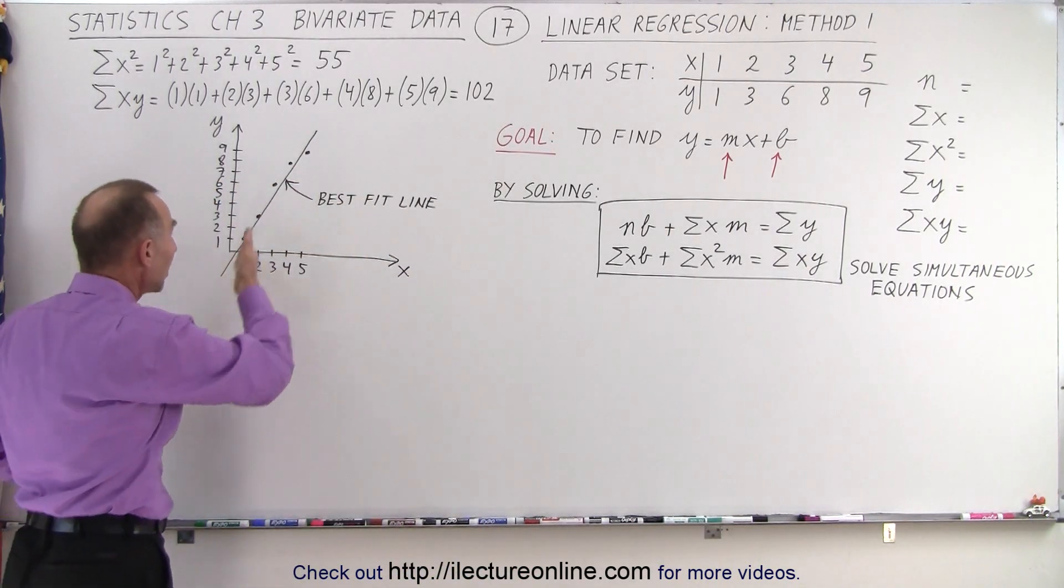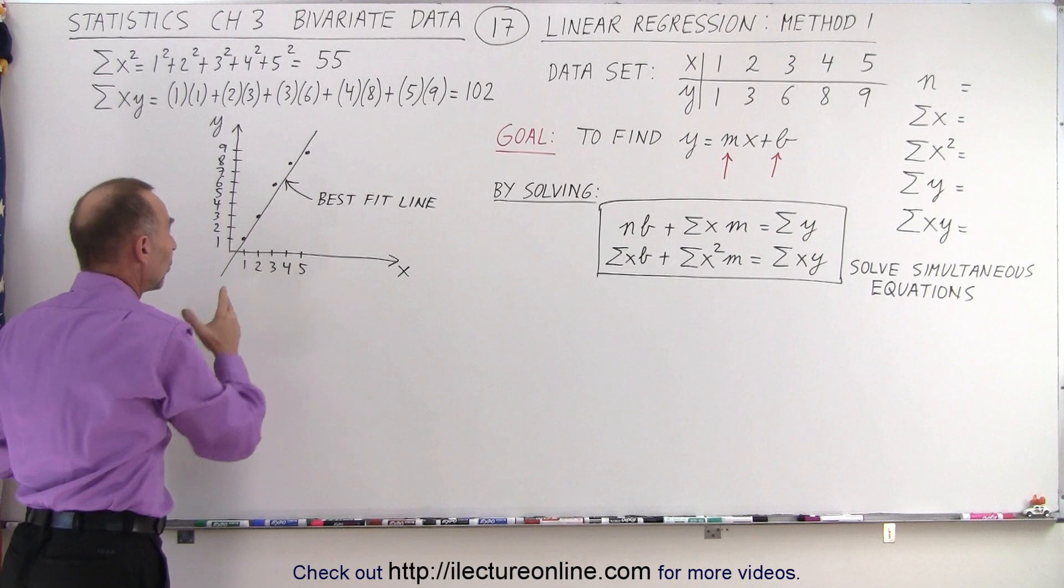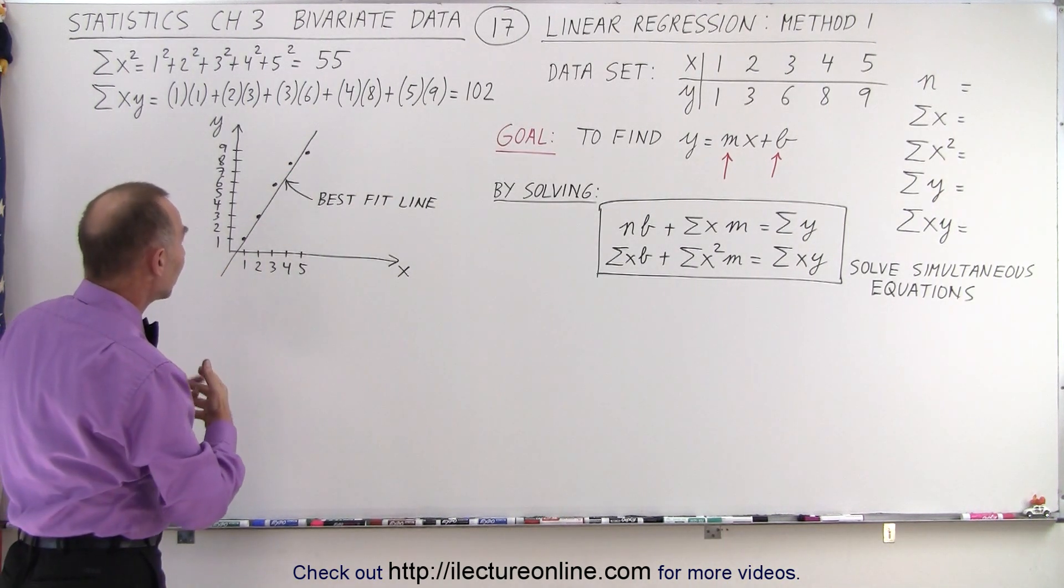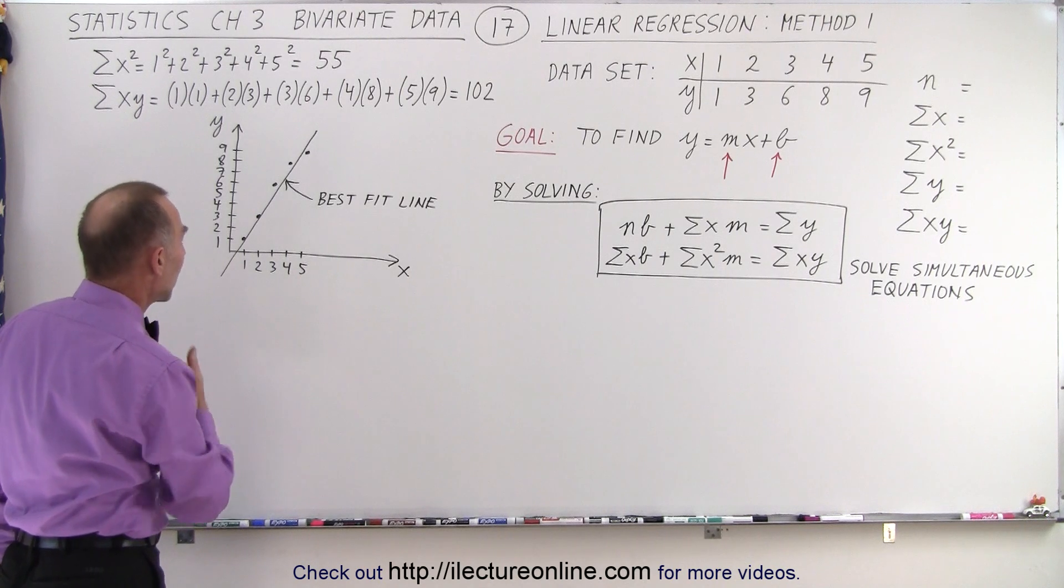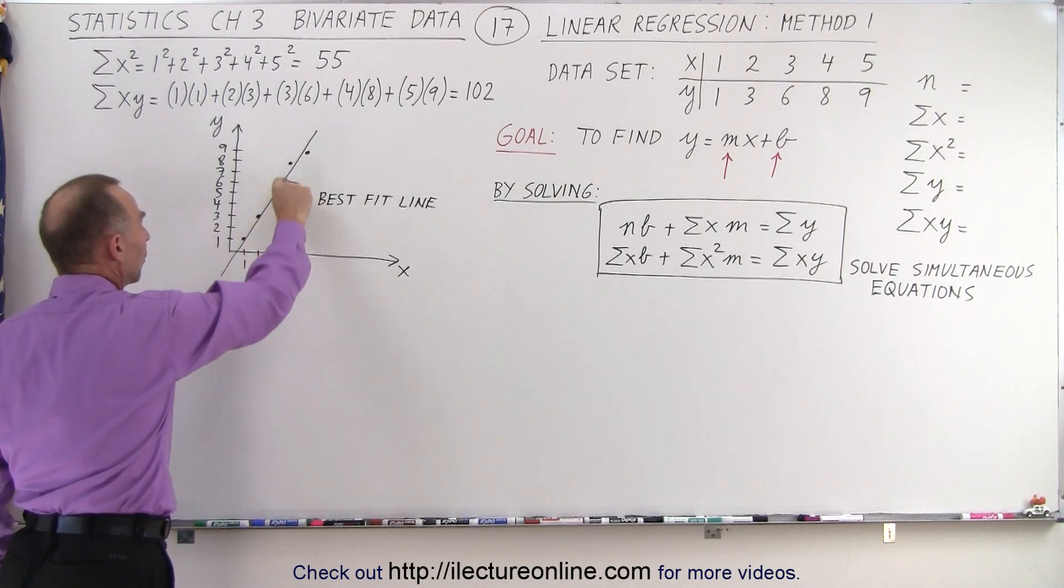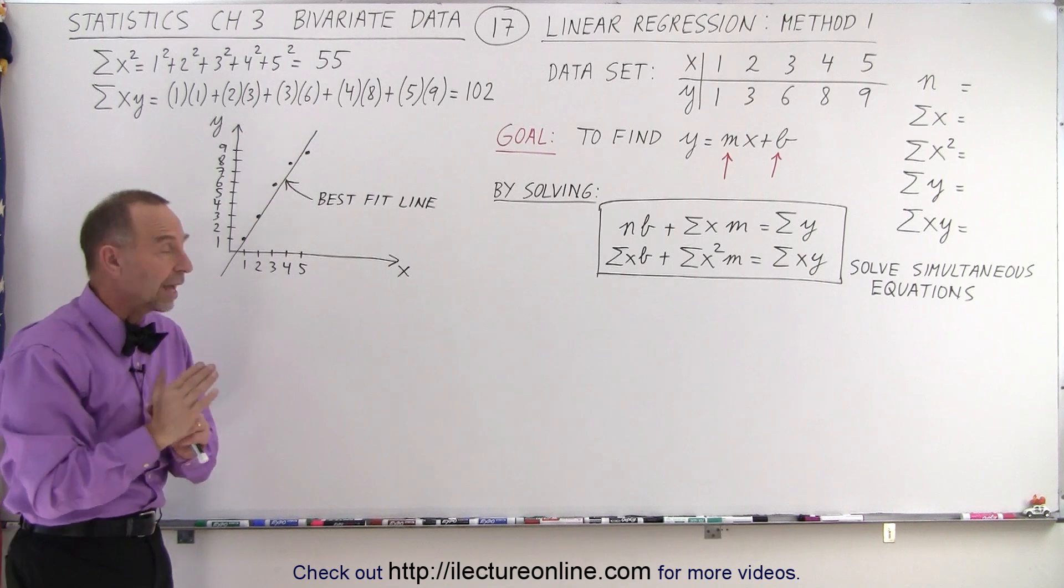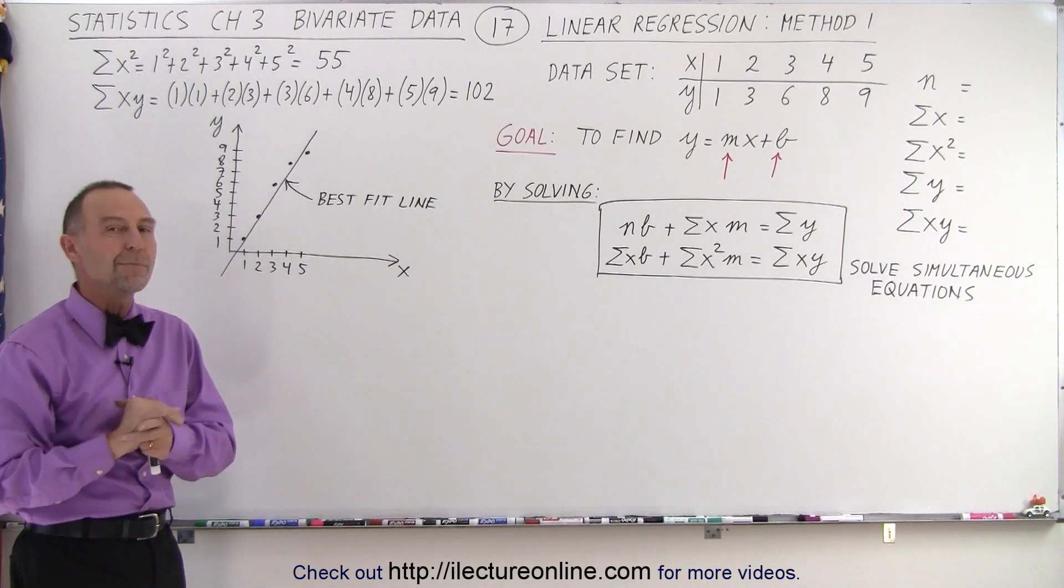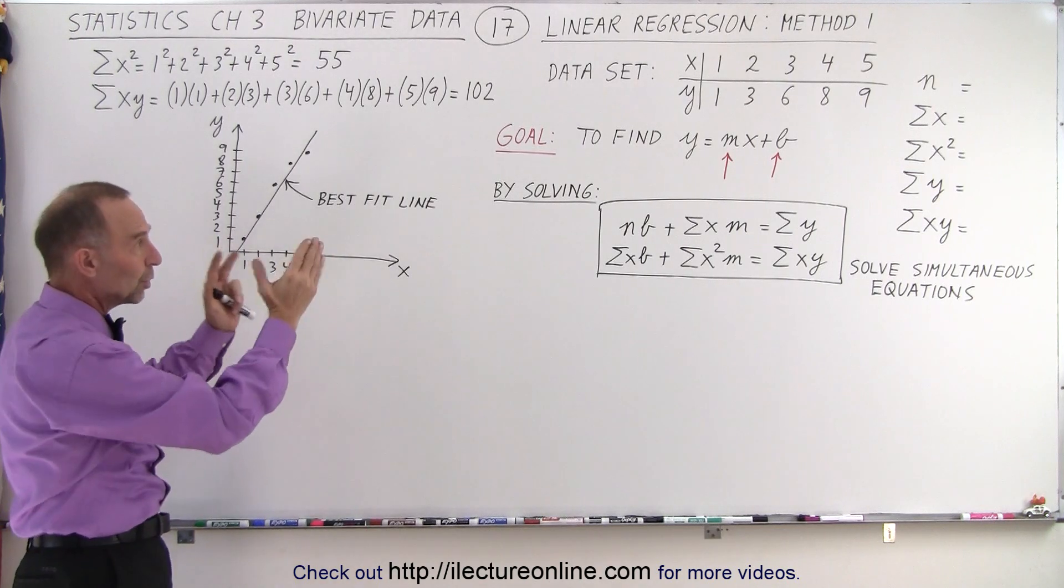The idea is to find the equation of the line that is what we call the best fit line. In other words, the line that represents the sum of least squares, the vertical distances between the data points and the corresponding points on the line. When you square those distances and sum them all up, that should be a minimum. How to do that? We do it as follows.